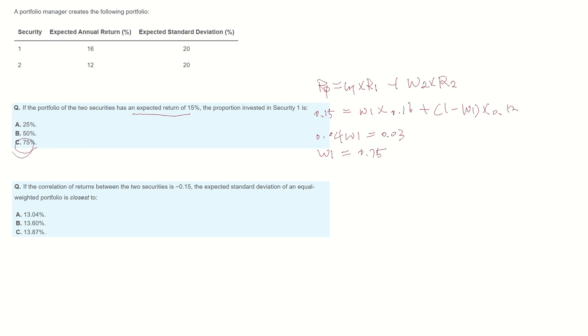Second question: if the correlation of returns between the two securities is minus 0.15, what is the expected standard deviation of an equal-weighted portfolio?